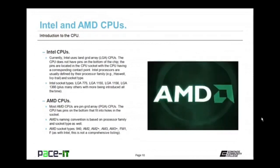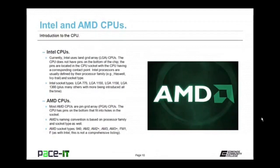Now let's move on to Intel's main competitor, AMD. Most AMD CPUs are pin grid array, PGA, CPUs — the CPU has pins on the bottom that fit into holes on the socket. AMD's naming convention is also based on processor family and socket type. Some AMD socket types include the 940, AM2, AM2+, AM3, FM1, and F. As with Intel, this is not a comprehensive listing, and more are being created all the time.